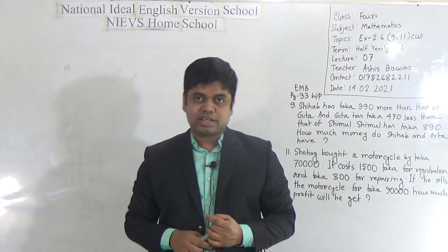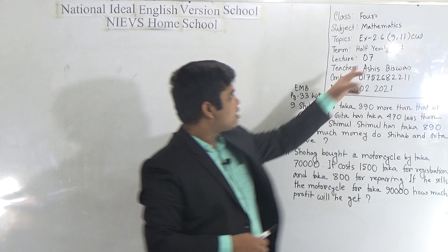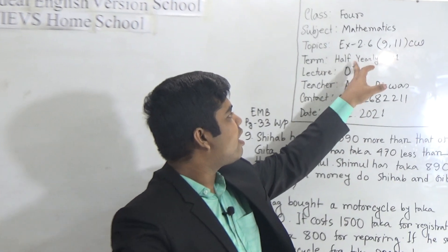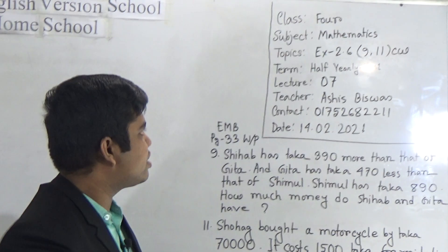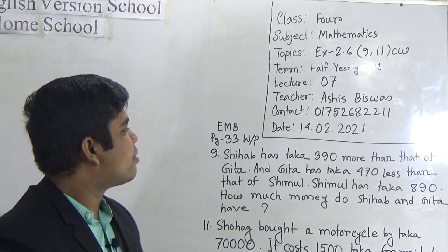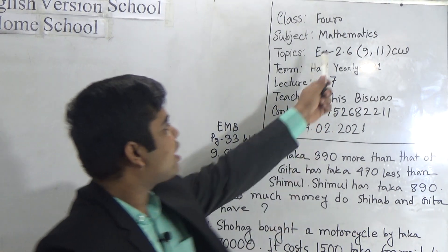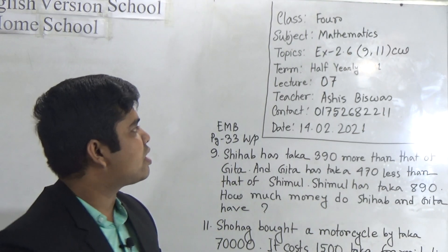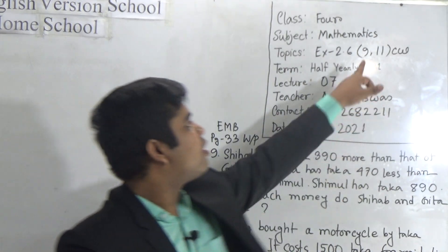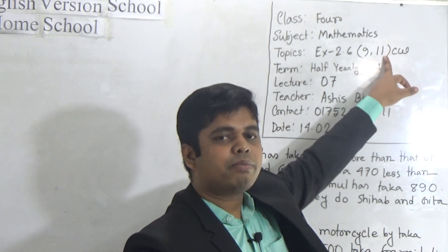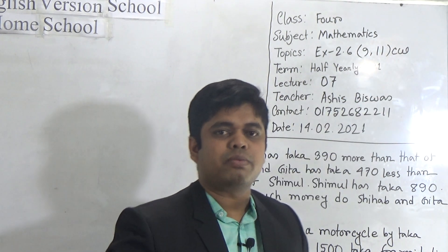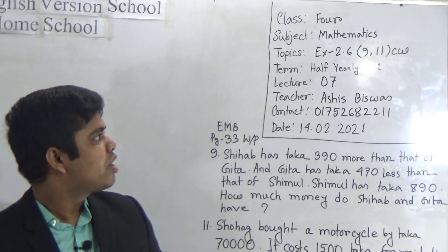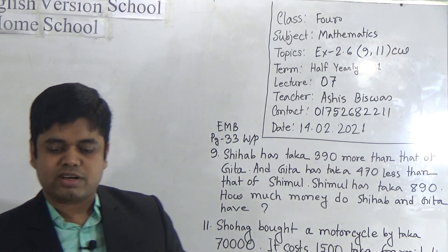My dear students, let us start our class. Today is our lecture number seven of the half-yearly 2021. Today's topic is Exercise 2.6. From Exercise 2.6 we shall solve two word problems: word problem number 9 and word problem number 11, as your classwork. And it is good news for you — there is no homework today.